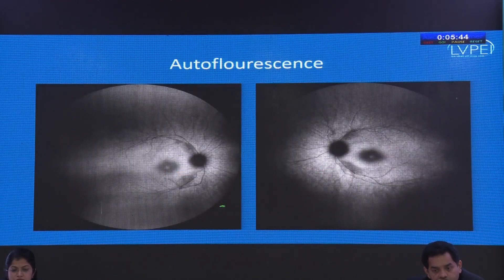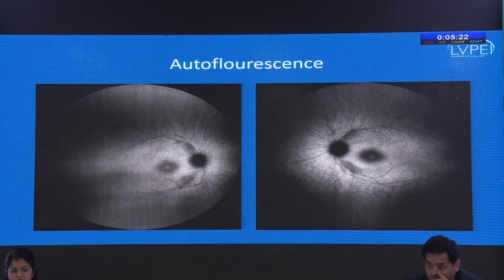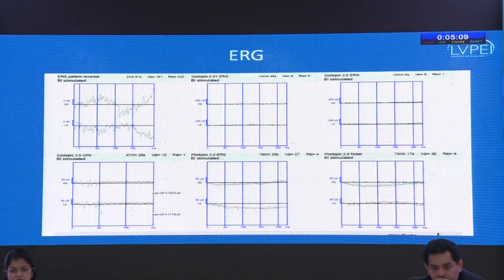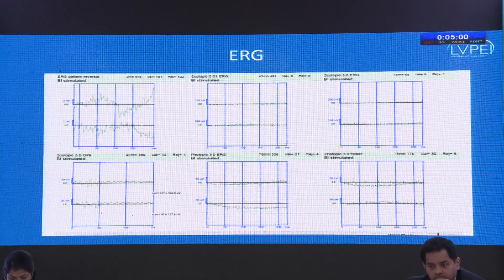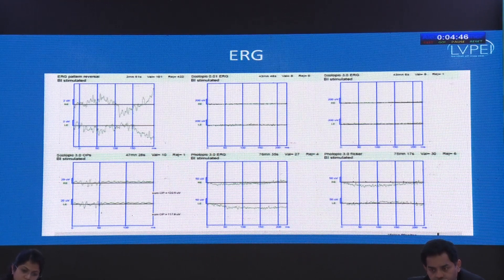Autofluorescence images show hyper-autofluorescence in the cone area at the fovea and pigmentary loss in the mid-periphery, with stippled hyper-autofluorescence in between — suggesting more diffuse dysfunction. Autofluorescence plays a great role in picking up these changes and can be done in the majority of patients. OCT of the macula shows foveal thinning and loss of photoreceptors in the outer retinal zones with foveal thinning, suggesting both cone and rod dysfunction. The ERG — a Metrovision ERG obtained in older patients — shows no responses in scotopic or photopic, with a pan-retinal rod and cone dysfunction.